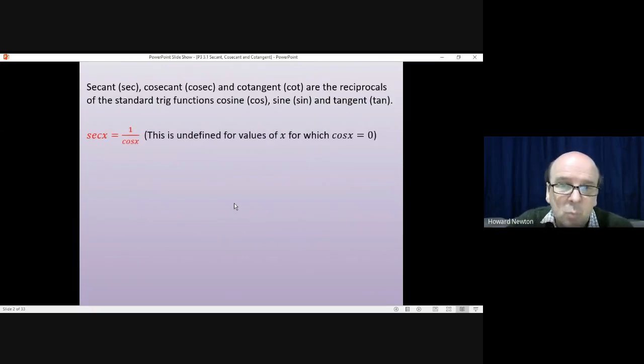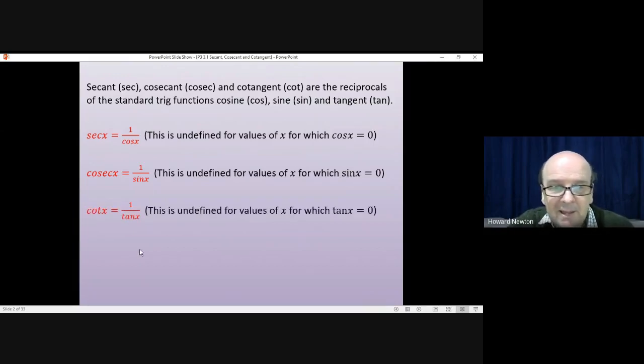So sec of x would be 1 divided by the cosine of x. And this is undefined with values of x where cos x would equal 0, because you can't divide by 0. Cosec of x is equal to 1 divided by sine x. Same issue if sine x is equal to 0. And cot x is equal to 1 over tan x. Same issue again if tan x equals 0.